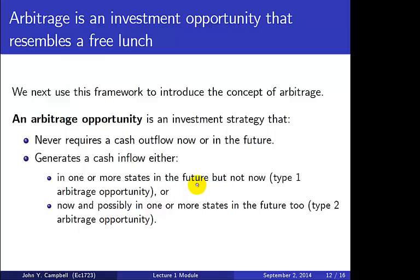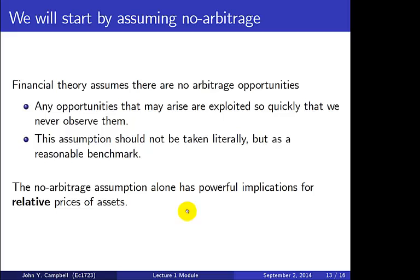In the first case, you don't pay anything now or in the future, and there's a chance you'll make money in the future — like being given a free lottery ticket. In the second case, you're actually given money today — paid to take the lottery ticket — and may get more money in the future as well. Finance theory proceeds under the assumption that there are no arbitrage opportunities; these deals are so good that if they arise, they're exploited so quickly they get eliminated and we never observe them.